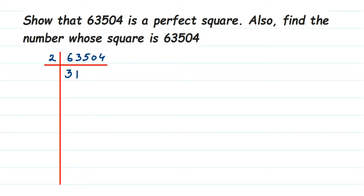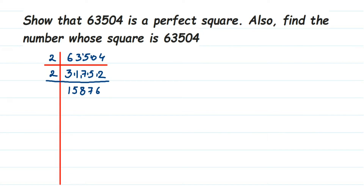So we divide by 2: 2 threes are 6, and working through the steps we get 31752. This number is also even, so we divide by 2 again. Continuing the division by 2 step by step — 2 sevens are 14, 2 fives are 10, 2 twos are 4 — we keep dividing. In case you have your own method of doing prime factorization, you can go with it; otherwise, divide the number by 2 and write down the answer in steps.